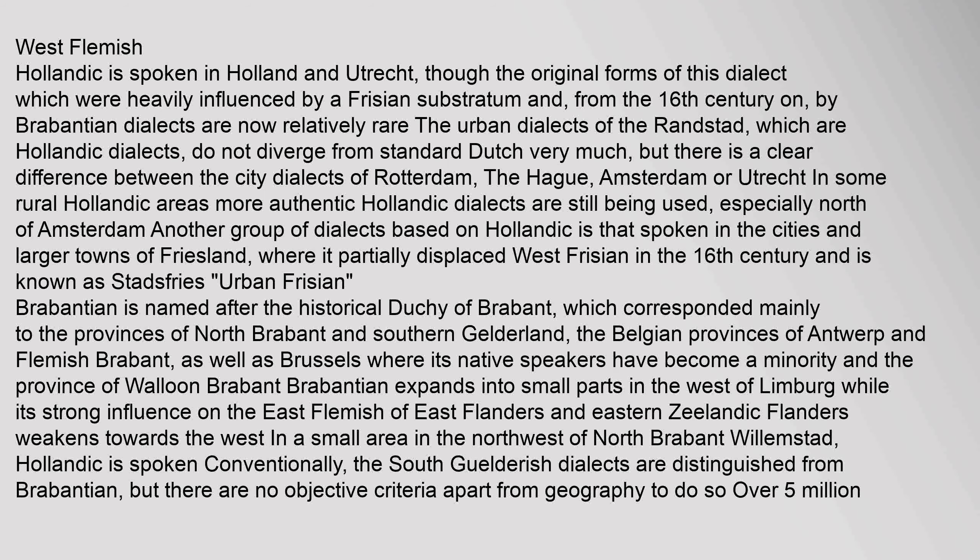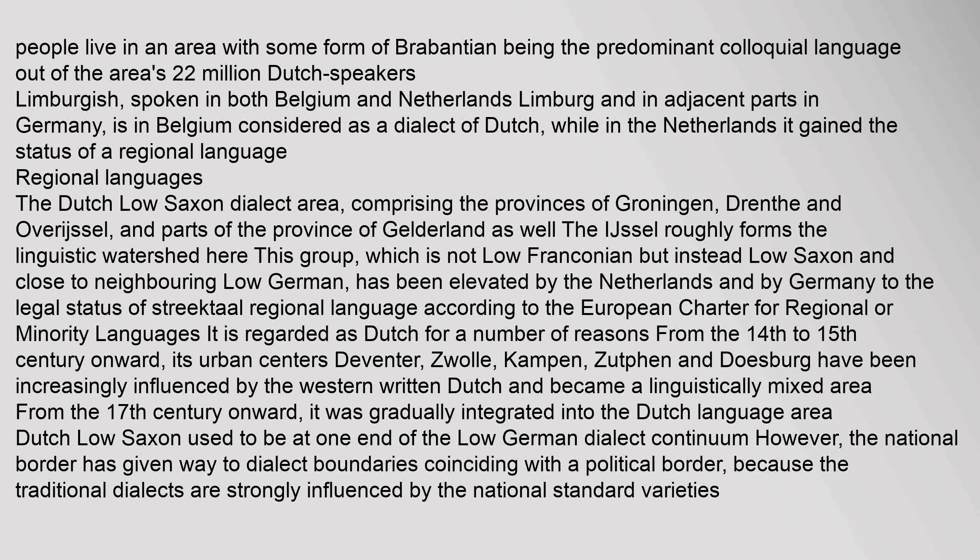Brabantian is named after the historical Duchy of Brabant, corresponding mainly to the provinces of North Brabant, Southern Gelderland, Belgian Antwerp, Flemish Brabant, and Brussels (where native speakers are now a minority), as well as Walloon Brabant. Over five million people live in an area where some form of Brabantian is the predominant colloquial language, out of the area's 22 million Dutch speakers. Limburgish, spoken in both Belgian and Dutch Limburg and adjacent parts of Germany, is considered a dialect of Dutch in Belgium but gained the status of regional language in the Netherlands.